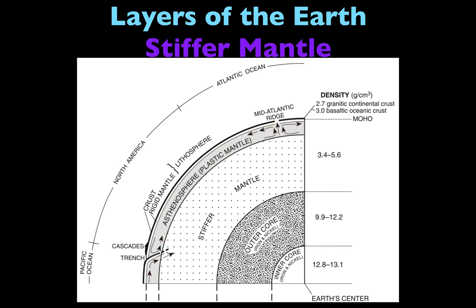The next layer is called the stiffer mantle, which is significantly thicker than the layers we just learned about previously. The density of the stiffer mantle can be anywhere between 3.4 to 5.6 grams per centimeter cubed.